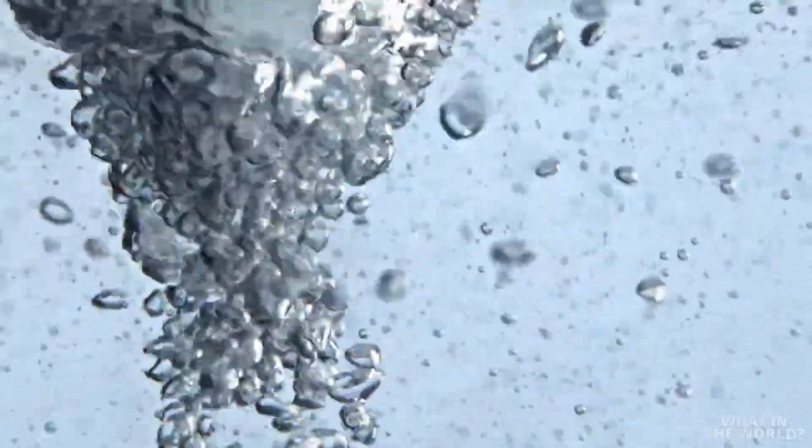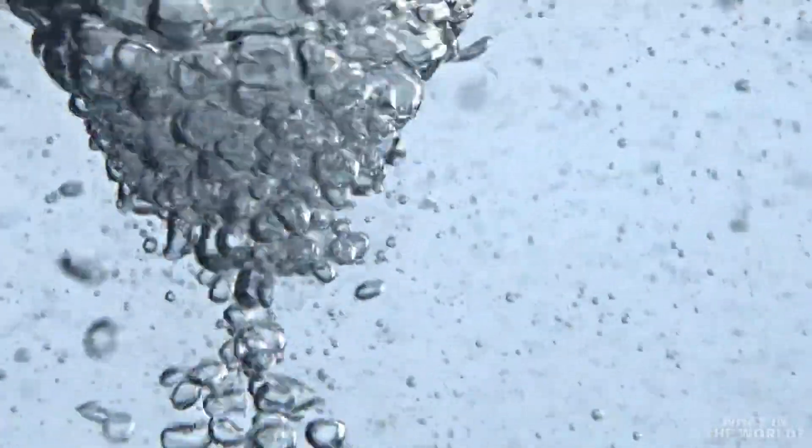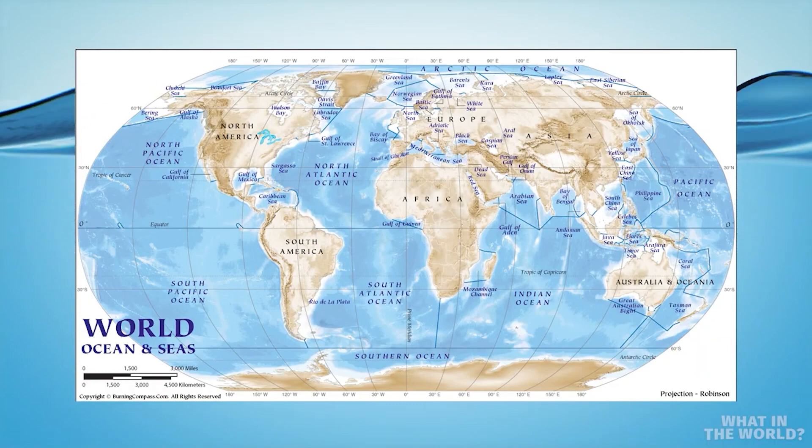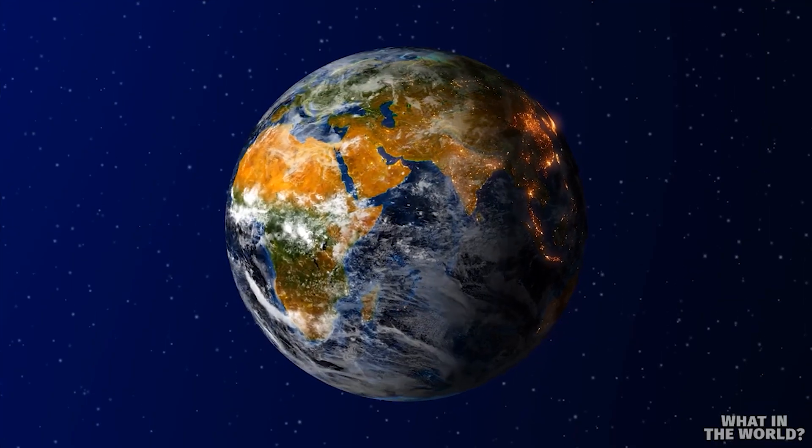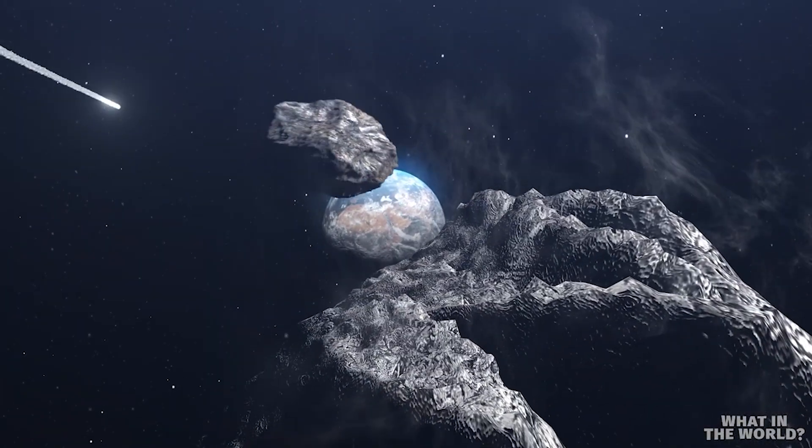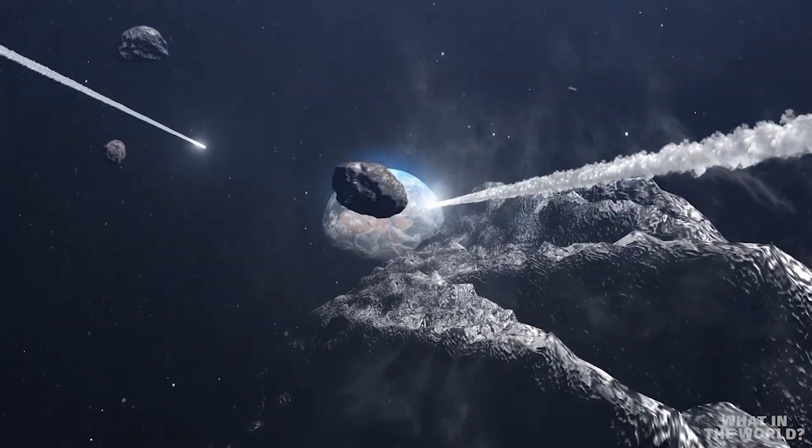Notably, this find could help explain the origin of our planet's water. Specifically, it may help us determine where Earth's seas came from, which would help better understand life on our planet. Some scientists have argued that Earth's water likely came from asteroids or comets.